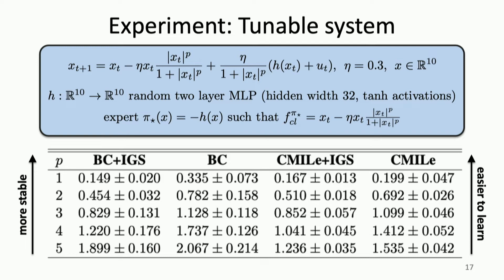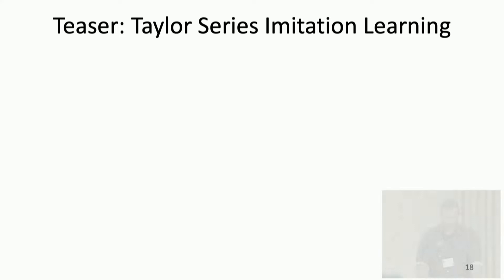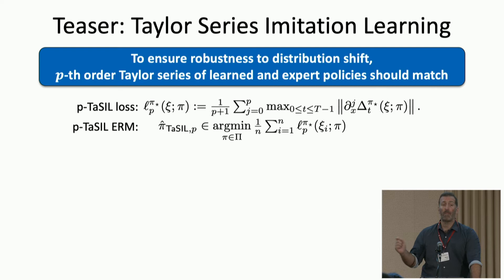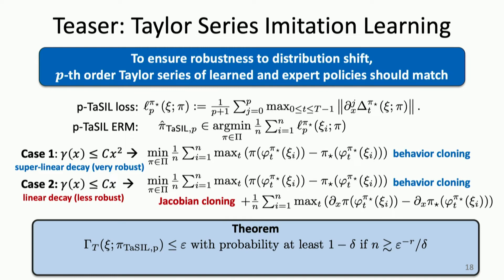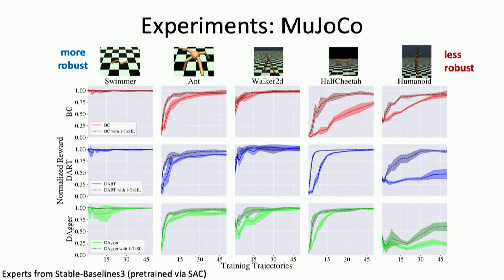One unsatisfying shortcoming in this approach is that enforcing the IGS constraint on your learned policy is actually very difficult to do — we had to resort to heuristics where we enforce this inequality pointwise. But I'm happy to say that in some new work, we've completely addressed this. It's in the context of Taylor series imitation learning: instead of just matching the policy, you match the first p-order terms of the Taylor series expansion of your learned and expert policy, where p is determined by the underlying properties of your expert. Depending on the properties of your IGS function, you either need to learn just the policy or the policy plus its Jacobian. These work really well in MuJoCo, comparing BC, DAgger, and DART with versions augmented with learning the Jacobian loss.